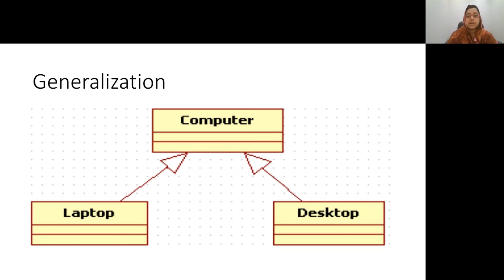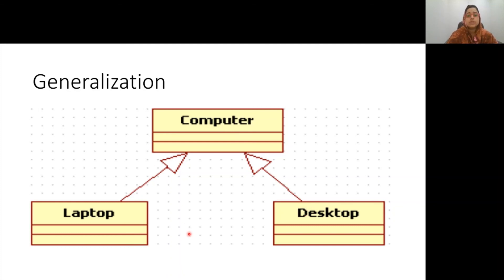Generalization is a different type of association relationship, sometimes described as a 'is a kind of' relationship. It is shown in UML as a line ending with a triangular arrowhead pointing at the more general class. For example, a laptop is a kind of computer, and a desktop is a kind of computer — this is the generalization relationship between the computer, laptop, and desktop classes.